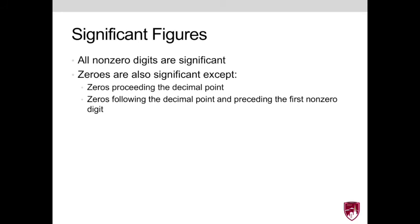So once we measure and collect all of our data with the correct significant figures, we must maintain that throughout all of the analyses that are required. And so as a reminder, all non-zero digits are significant, and all zeros are significant except when they precede the decimal point, or when they follow the decimal and precede the first non-zero digit.